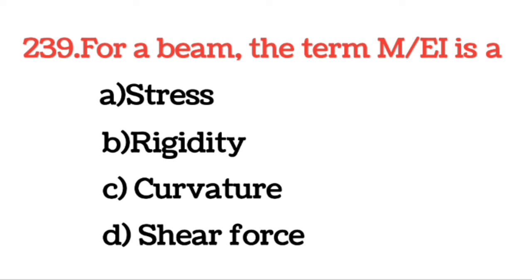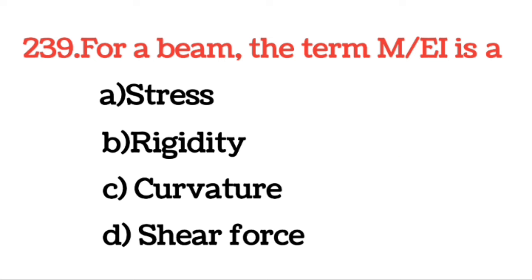Next question: For a beam, the term M/EI is curvature. एक beam के लिए जो term है M/EI वह curvature होता है।